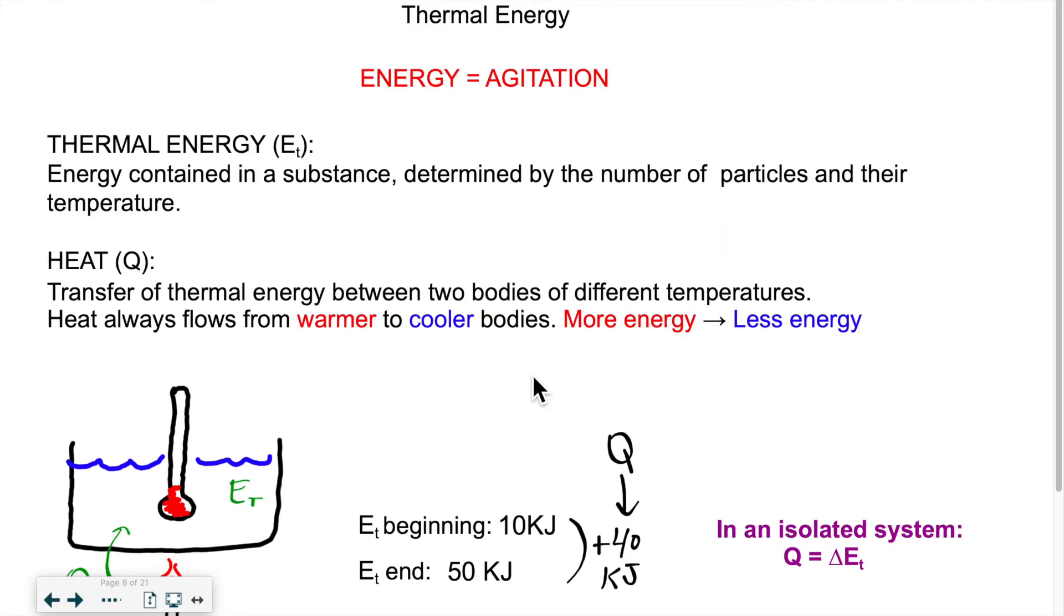So what is energy? Energy is related to the amount of movement of particles within a substance. Thermal energy is energy that the substance already has, and it translates in the amount of movement that the particles have. So the warmer the substance, the more energy it has, and the more agitated its particles are.